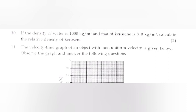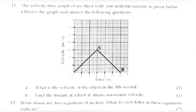Question 11: The velocity-time graph of an object with non-uniform velocity is given below. Observe the graph and answer the following questions. (a) What is the velocity of the object in the fourth second? Answer: 10 meter per second. (b) Find the instant at which it attains maximum velocity. Answer: 6th second.